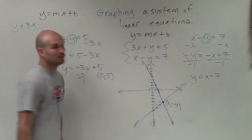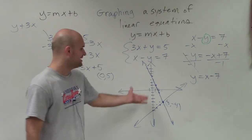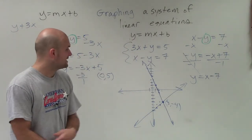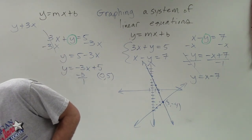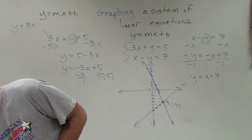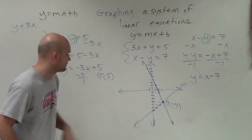So the intersection point, as long as I did my graphing correctly, is at the coordinate point 3, negative 4. And actually, I can check my work. Number 12. Yep. 3, negative 4. I did it correctly. Good.